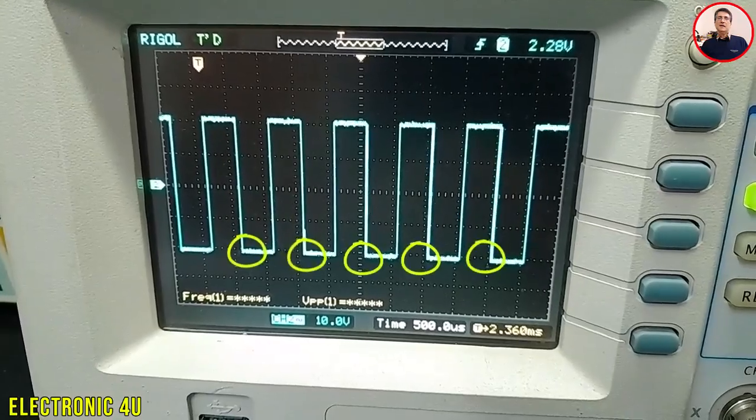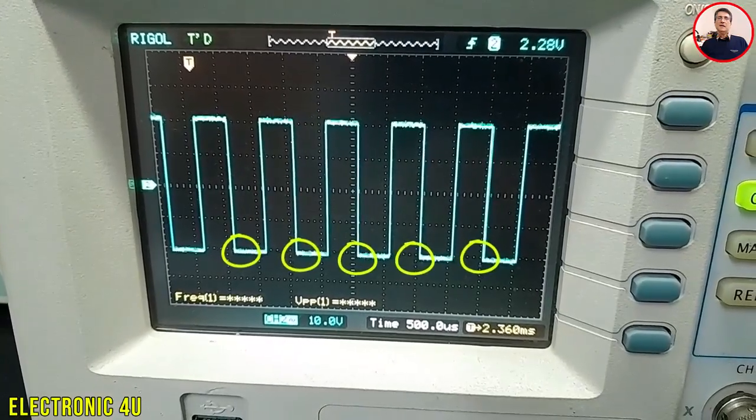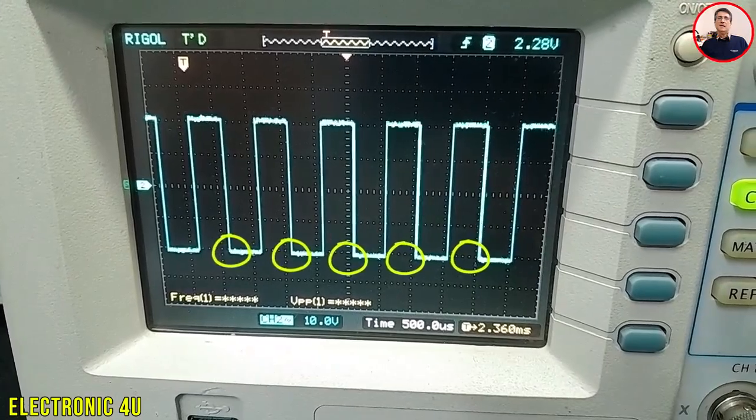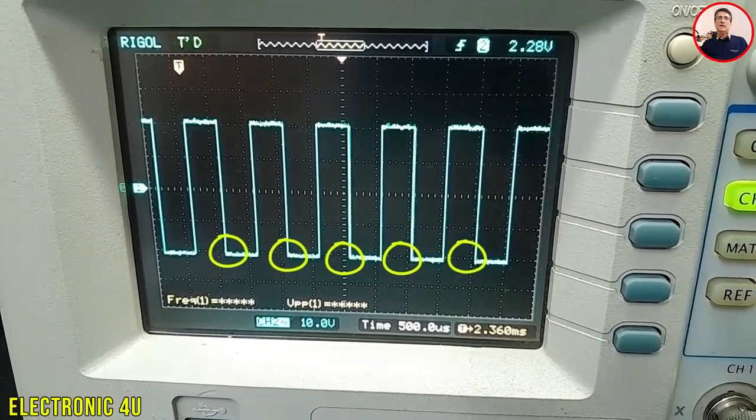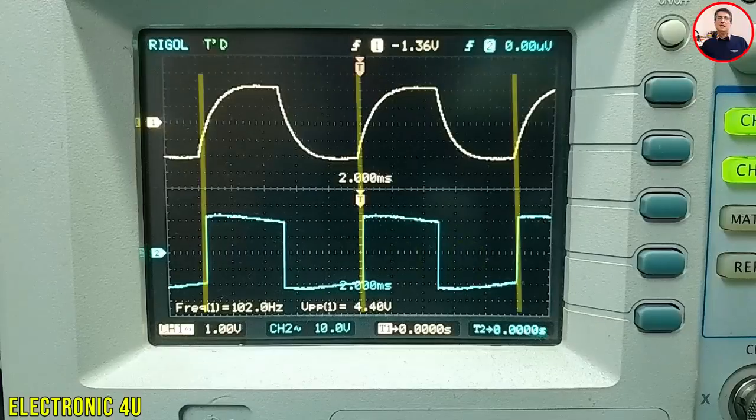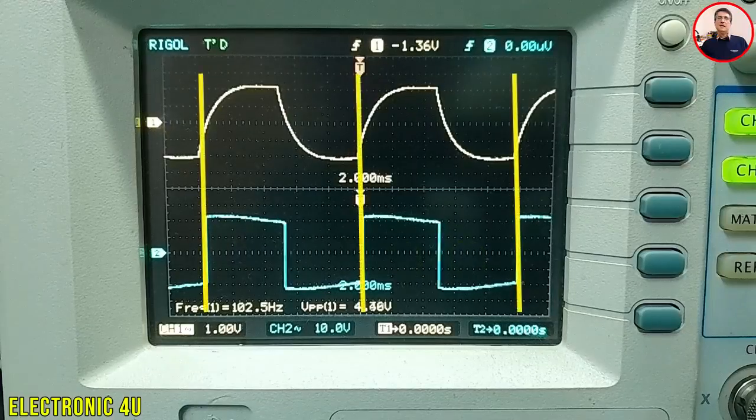In this video, we're going to look at your most powerful tool for fixing this, the external trigger. Simply put, a trigger tells the oscilloscope exactly where to start drawing the waveform. When the starting point is the same for every cycle of the signal, we see a stable image.